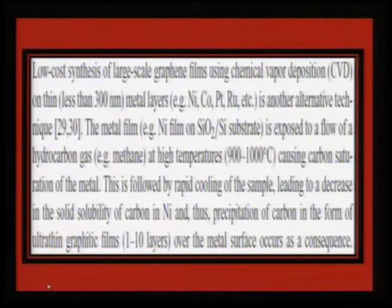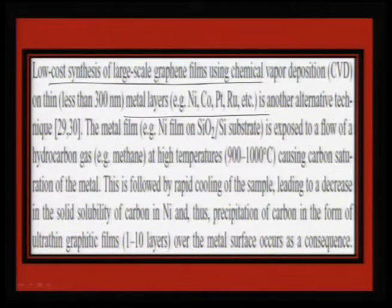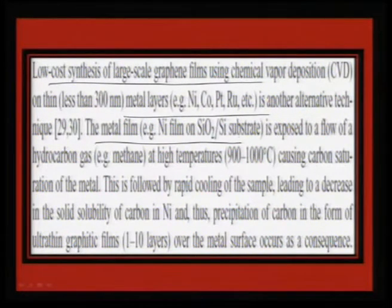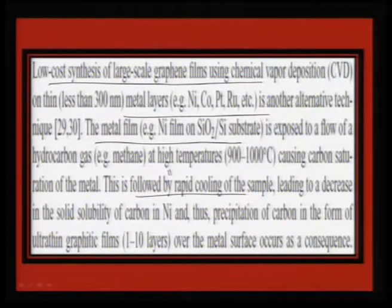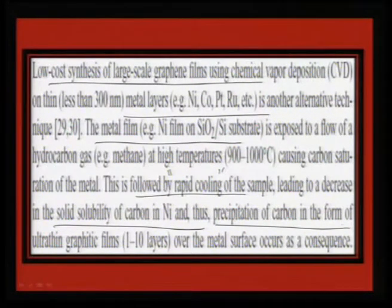It is possible to easily calibrate the thickness of graphene. For low-cost, large-scale synthesis, chemical vapor deposition using metal layers like nickel, cobalt, platinum, or ruthenium is an alternative technique. Metal films such as nickel on silicon dioxide are exposed to a flow of hydrocarbon gas — usually methane — at high temperatures, causing carbon saturation of the metal. This is followed by rapid cooling, which is the key trick: rapid cooling decreases the solubility of carbon in nickel, causing it to come out as a graphene sheet. This is a precipitation process of carbon in the form of ultra-thin graphitic sheets.